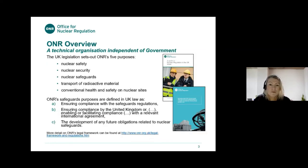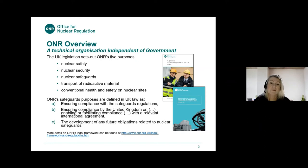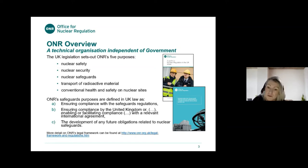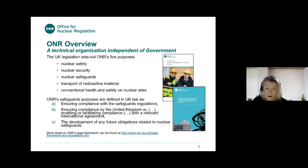UK legislation sets out ONR's five purposes, of which safeguards is one. We also have nuclear safety, security, the transport of radioactive material, and conventional health and safety on nuclear sites. ONR's safeguards purposes are defined in UK law as ensuring compliance with safeguards regulations, enabling or facilitating compliance with a relevant international agreement, and the development of any future obligations related to nuclear safeguards. These slides will be published later on with links to relevant frameworks and guidance throughout.